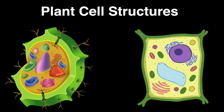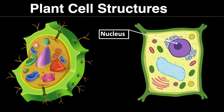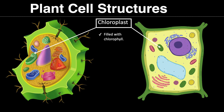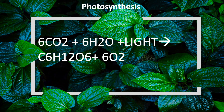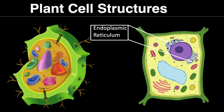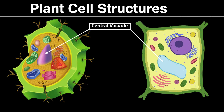Now we're going to talk about plant cell structures. Some organelles are similar to animal cells, but noticeable differences include the cell wall — eukaryote or human cells don't have those. We have our nucleus, mitochondria as the powerhouse, and our chloroplasts. Chloroplasts are filled with chlorophyll, a natural compound that gives plants their green pigmentation and helps them absorb energy from the sun through photosynthesis. We also have the Golgi apparatus, endoplasmic reticulum (smooth and rough ER), peroxisomes responsible for oxidative reactions and breaking down toxins, and the central vacuole as a storage warehouse for molecules.